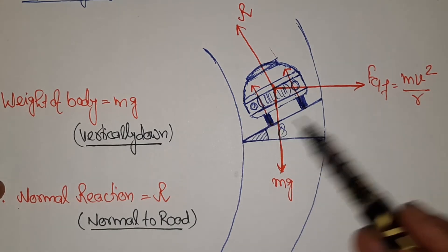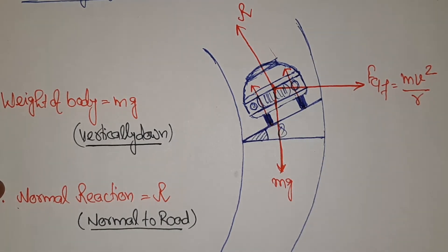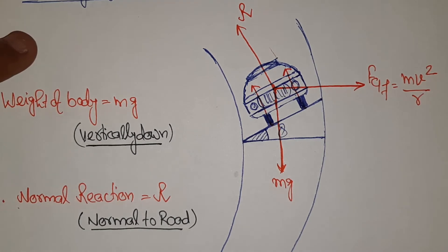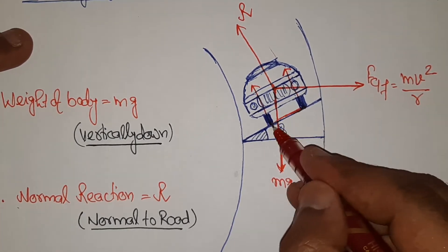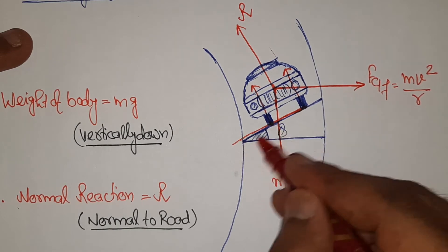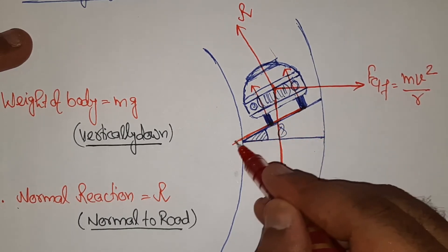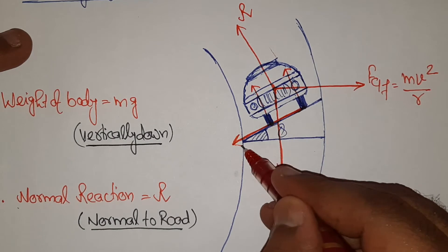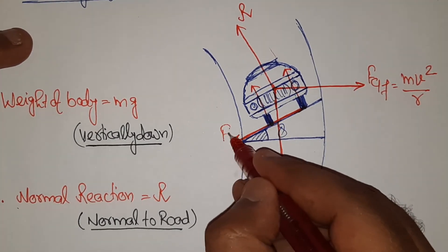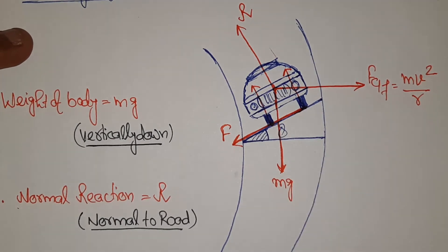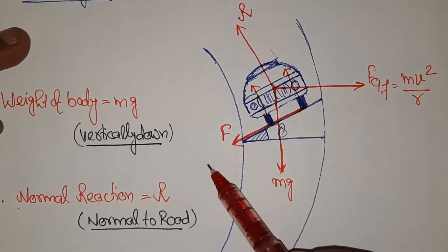Centrifugal force tries to skid the body away from center. When it tries to skid outward, along the road towards center a force of friction F will act. It is a contact force along the road.